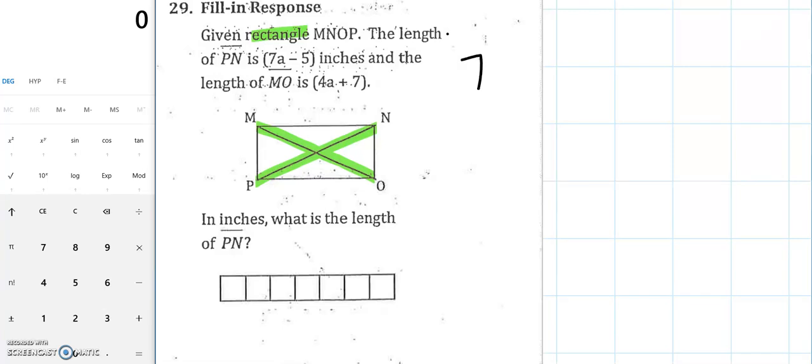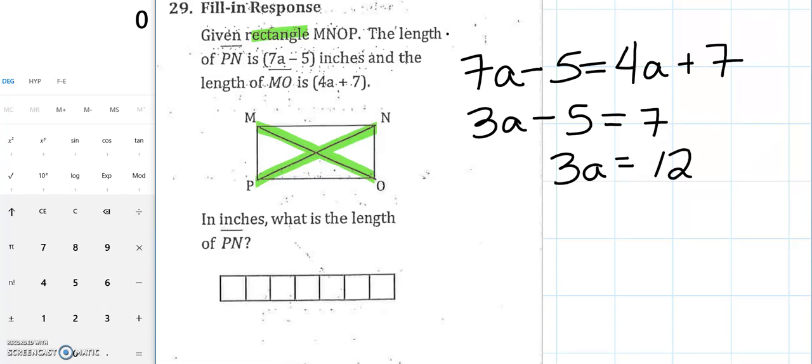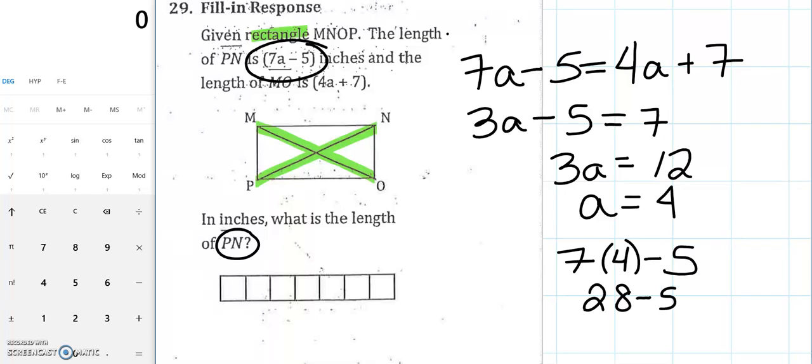So we're going to do 7a minus 5 equals 4a plus 7. I'm going to subtract 4a from both sides. So now I have 3a minus 5 equals 7, add 5, 3a equals 12, divide both sides by 3, and a equals 4. So the question doesn't ask us just for a, it's asking for the length of PN. So we have to take that a and plug it back in. So 7 times 4 minus 5, 7 times 4 is 28, minus 5 is 23. So the length of that diagonal PN is 23.